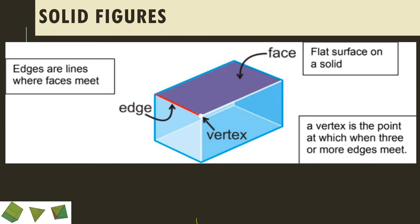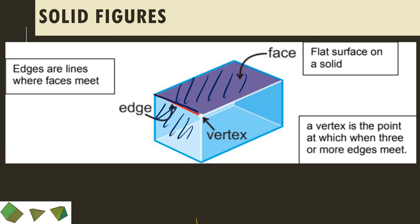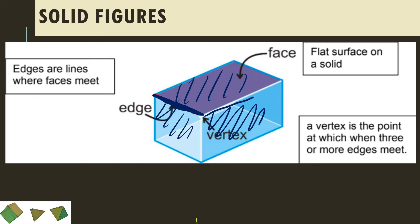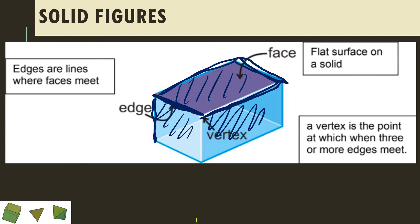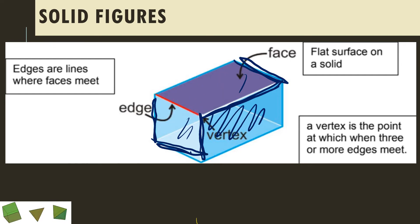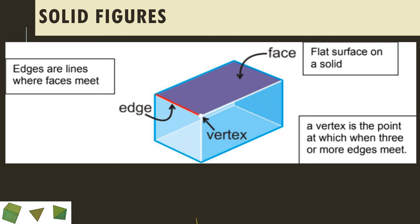Next, the edges. An edge is the line where two faces meet. For example, the top face and the left side face meet along a line — that's one edge. The top side and the front side meet — that's another edge. The top side and the right side — another edge. Those lines where the faces meet are the edges.